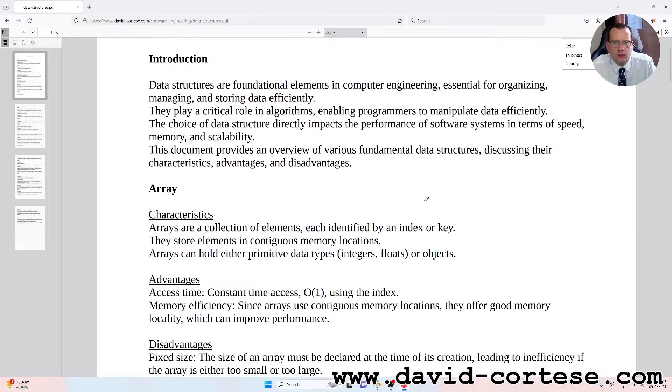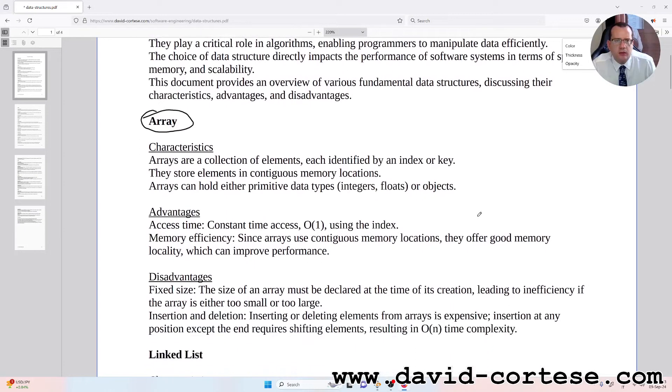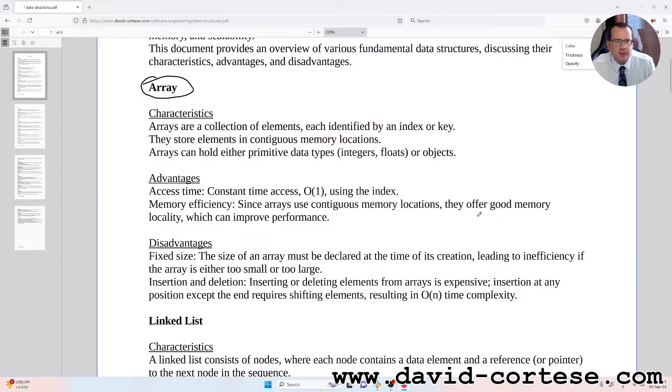This document provides an overview of various fundamental data structures, discussing their characteristics, advantages and disadvantages. The first is the array. Arrays are a collection of elements, each identified by an index or key. They store elements in contiguous memory locations.